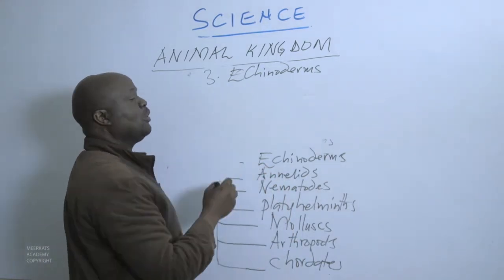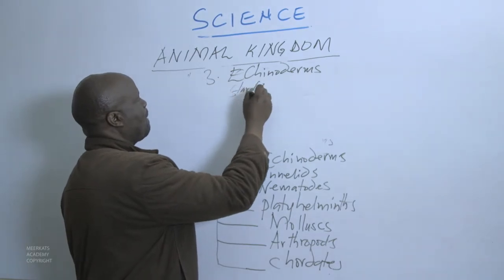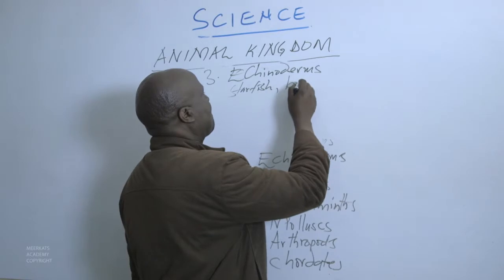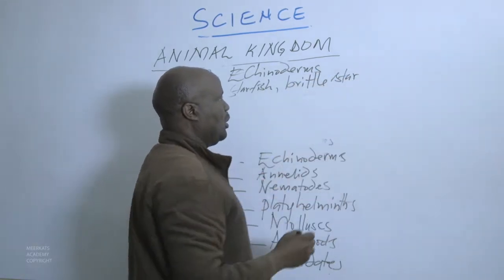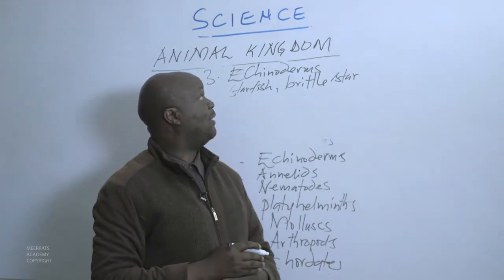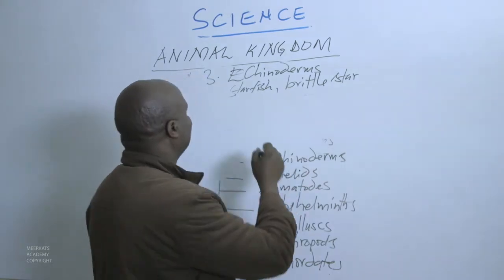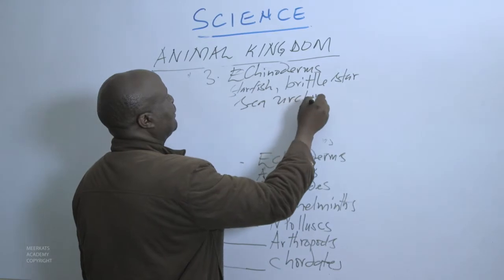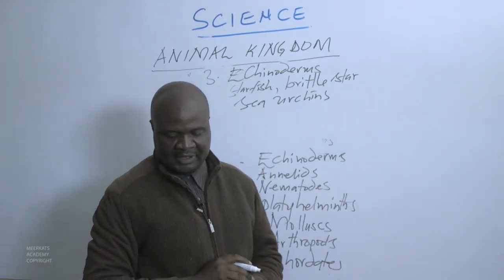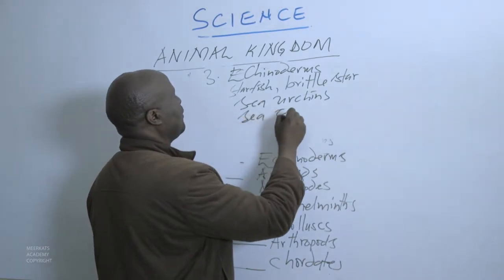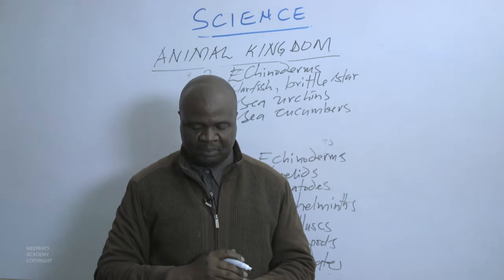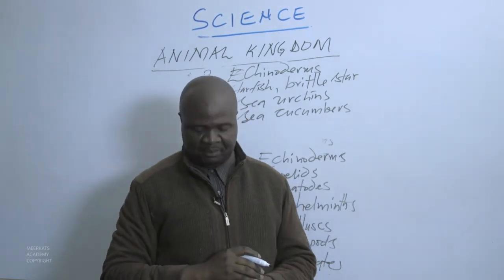Starfish belongs to this group. We also have the brittle star, which also falls under the Echinoderms. We have the sea urchins, which also belong to this group. And we have the sea cucumbers, which also belong to this group of Echinoderms. They all live in the ocean, often near the coast.